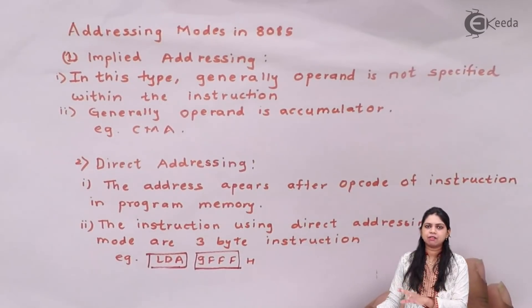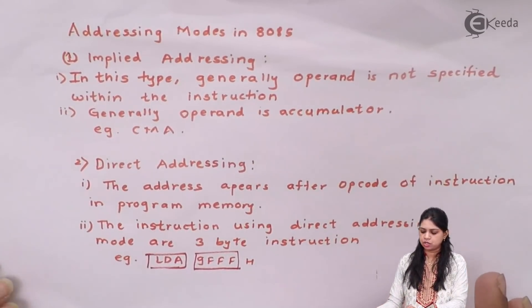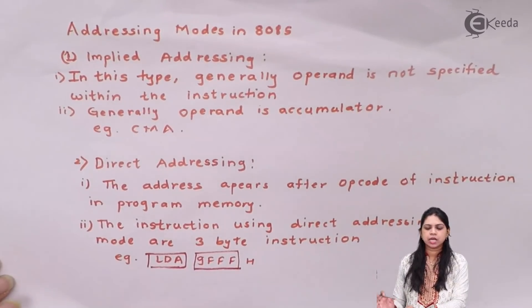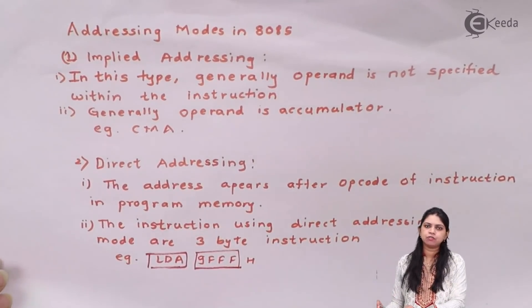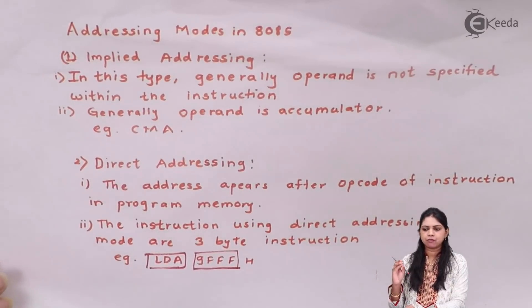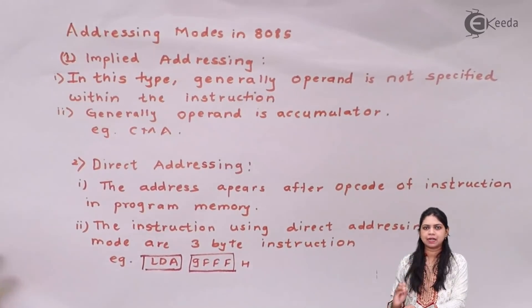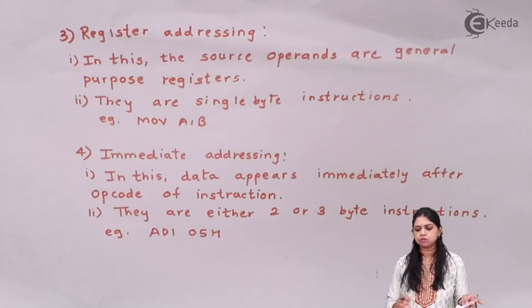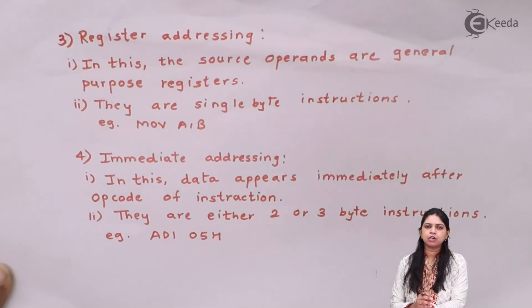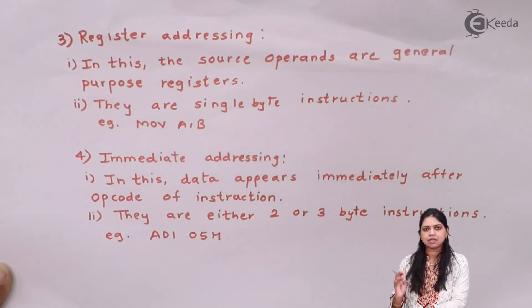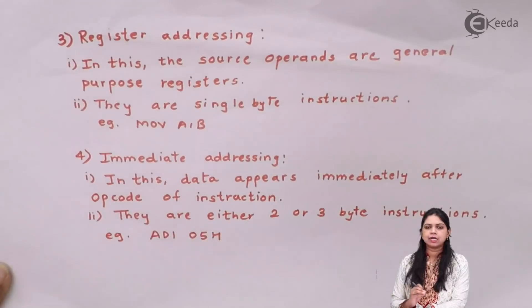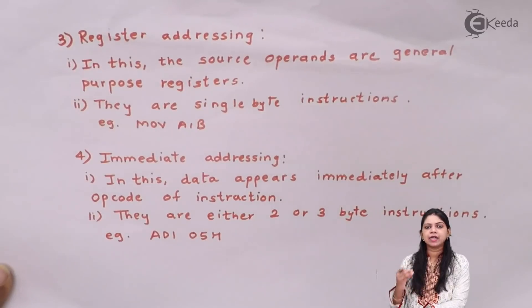If only the opcode is given, you can identify the instruction as implied addressing mode. Next, direct addressing mode — the address comes immediately after the opcode of the instruction. For example, LDA, STA — such instructions come under direct addressing mode. If the address appears immediately after the opcode, it is direct addressing mode. Next, register addressing mode — the source operands are general-purpose registers, so those instructions come under register addressing mode.